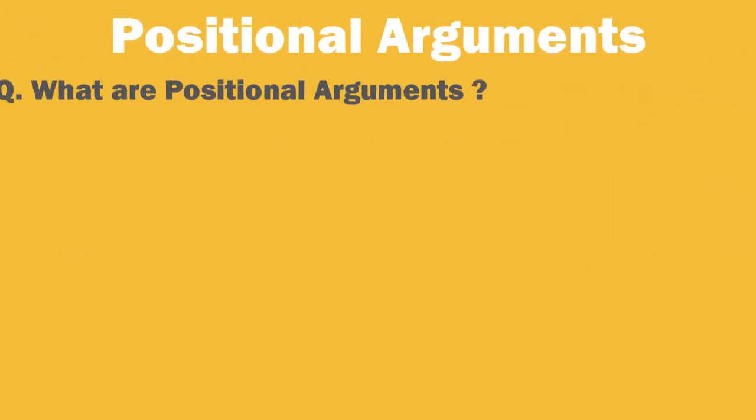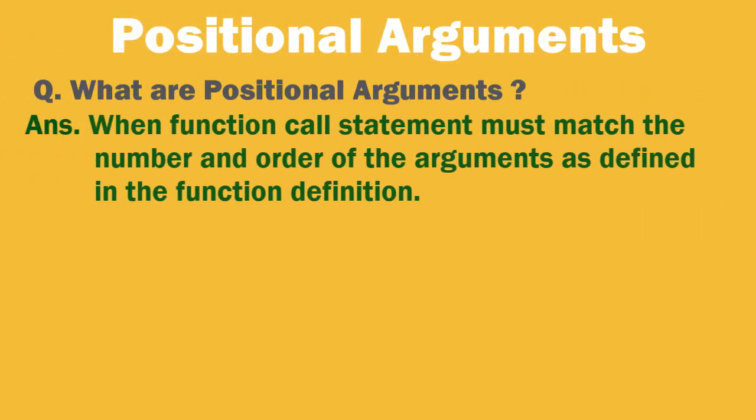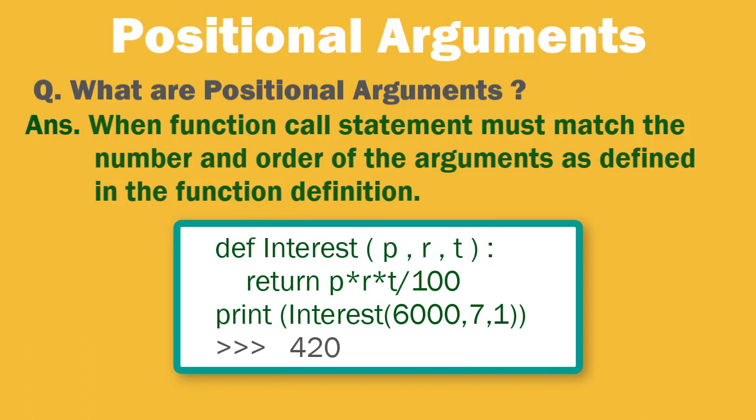Now what are positional arguments? When function call statement must match the number and order of the arguments as defined in the function definition, it is called positional arguments. Like this function takes in three arguments, so you need to give the three arguments in the same sequence.